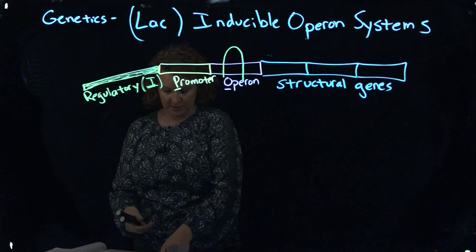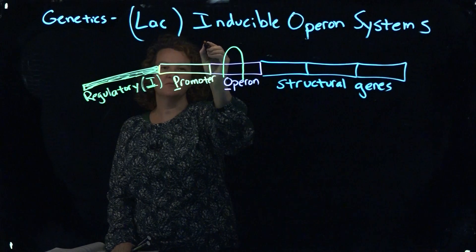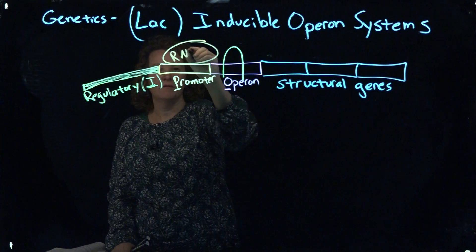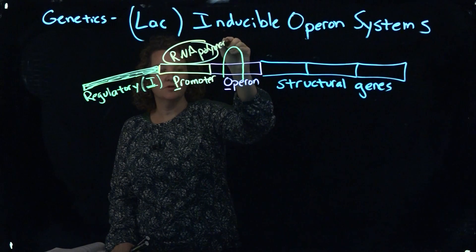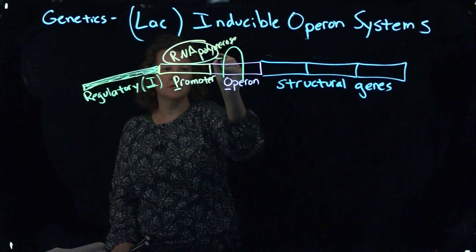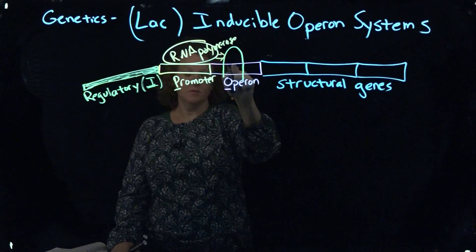So RNA polymerase will bind here and attempt to do transcription, but what happens is it bumps into the repressor protein.